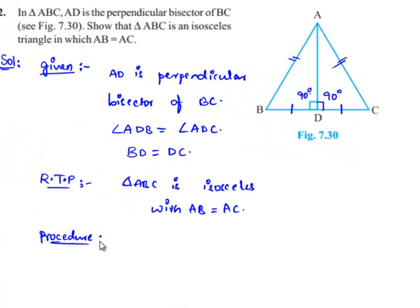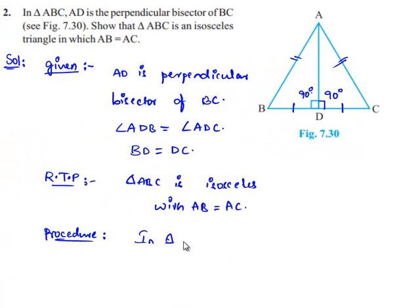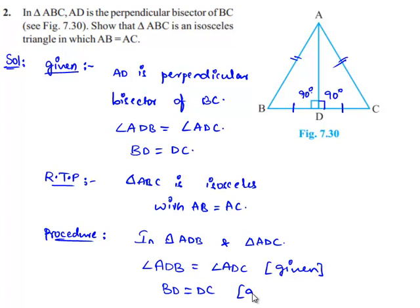Moving on to the procedure, let us consider triangles ADB and triangle ADC. In this, we know that angle ADB is equal to angle ADC, which is given, and also BD is equal to DC, which is also given, and AD is the common side for both the triangles.